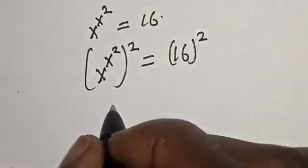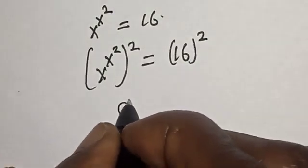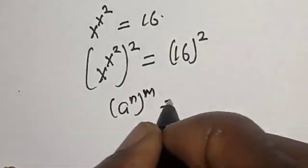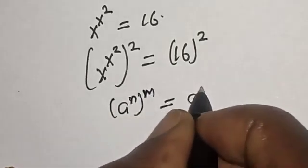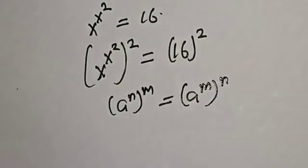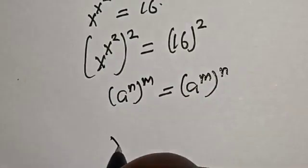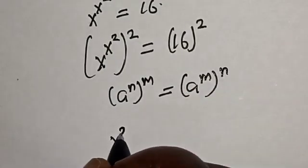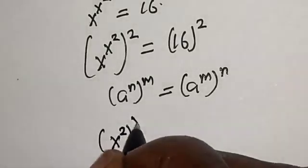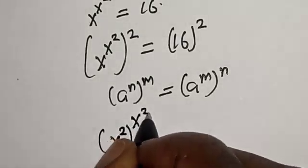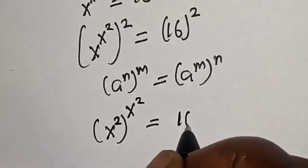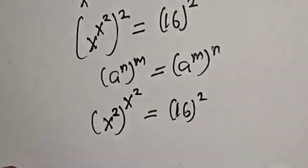Now remember this exponential rule: a raised to the power n raised to the power m is equal to a raised to the power nm. So s raised to the power s squared times 2 is equal to 16 squared.